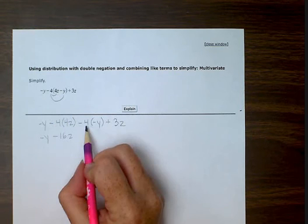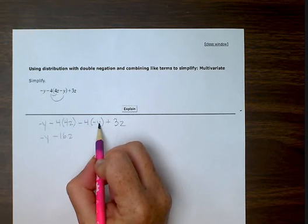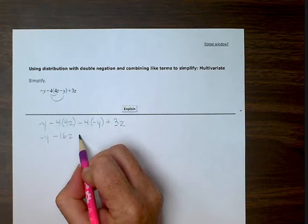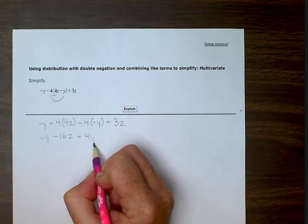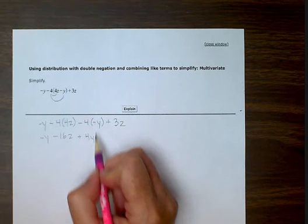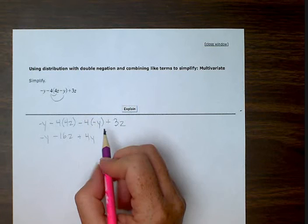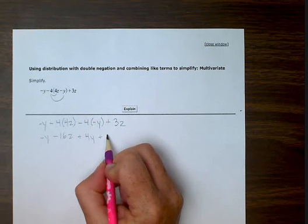Minus 4 times minus y gives us a positive 4y. A negative times a negative gives a positive. Plus 3z.